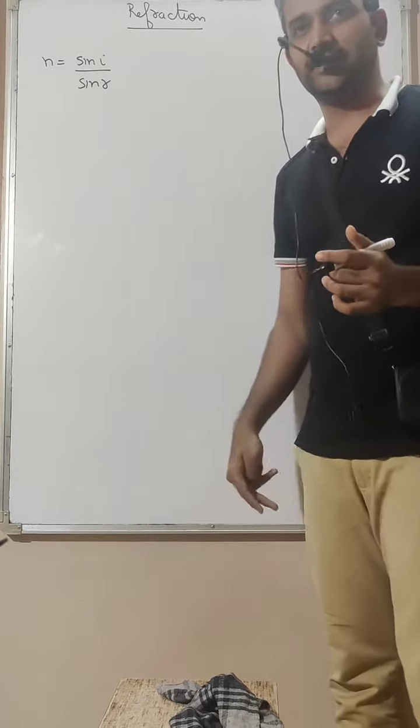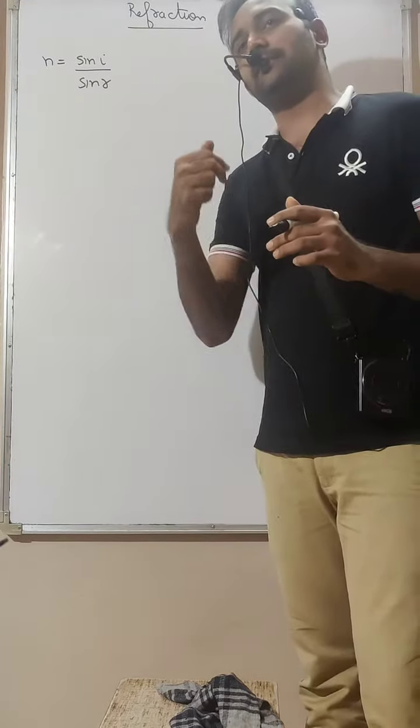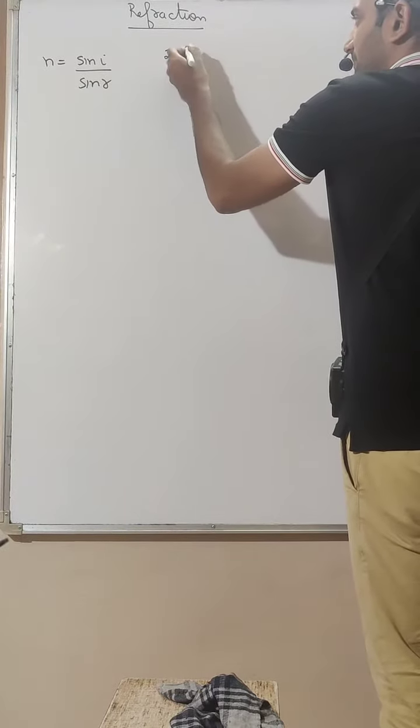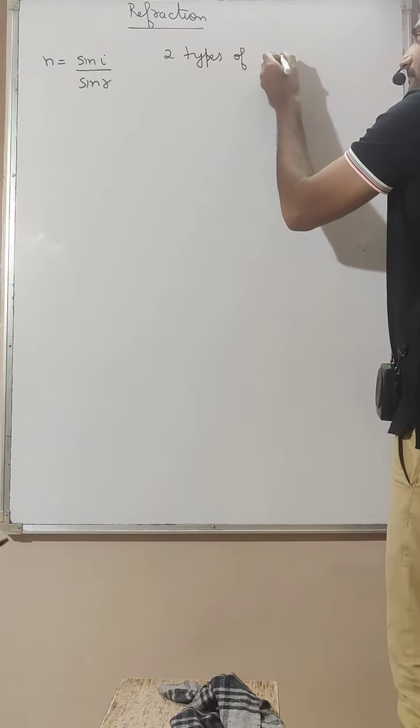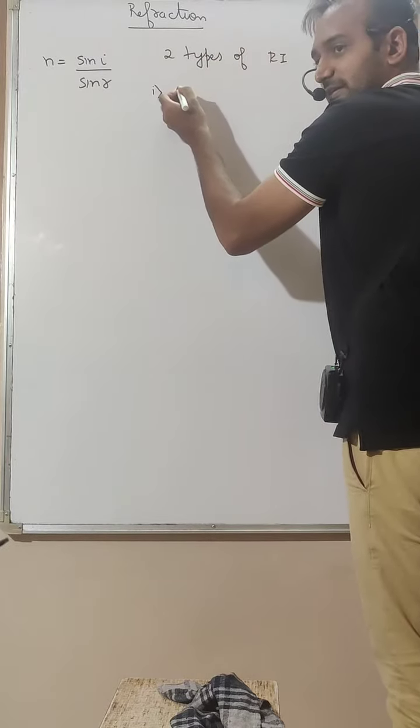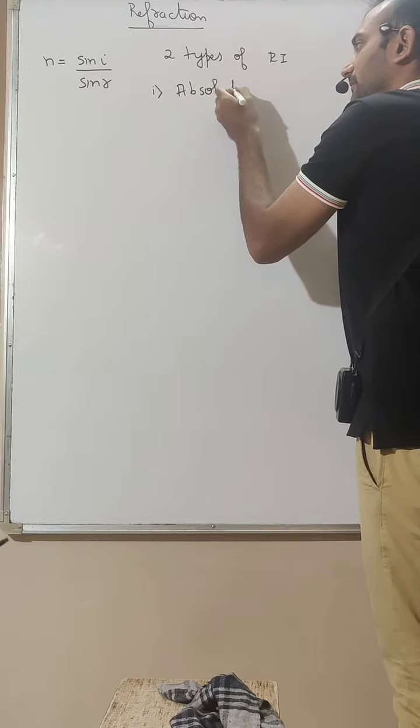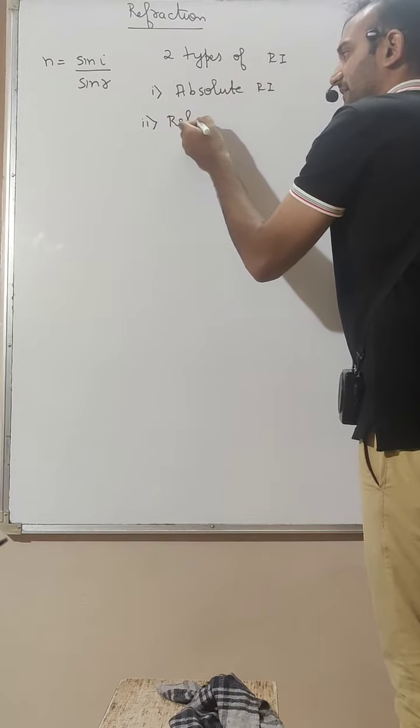So we will get into that now. Before I get into that we have to understand there are two types of refractive index. First RI is absolute RI and second RI is relative refractive index.